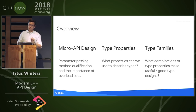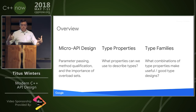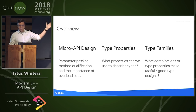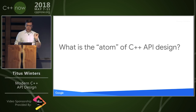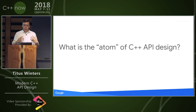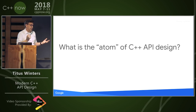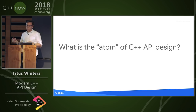This talk will be in roughly three parts, starting small with basic units of design and working our way up to big questions like: is this an acceptable design pattern for types? What is the atom of C++ API design? What is the fundamental small chunk of design? This might not be the smallest chunk — there are protons smaller than atoms, after all. But it should be the small thing that we think about things in terms of.